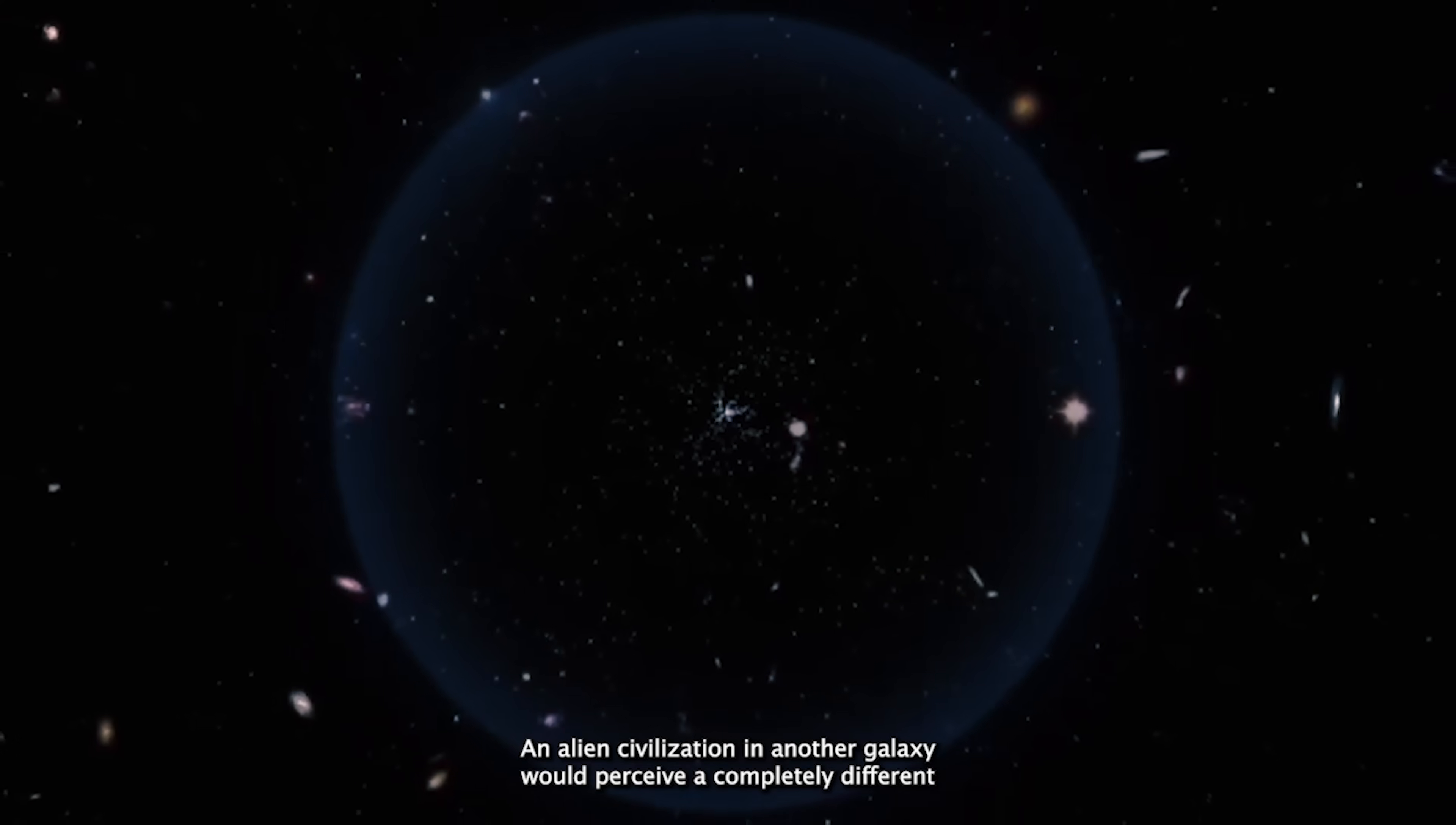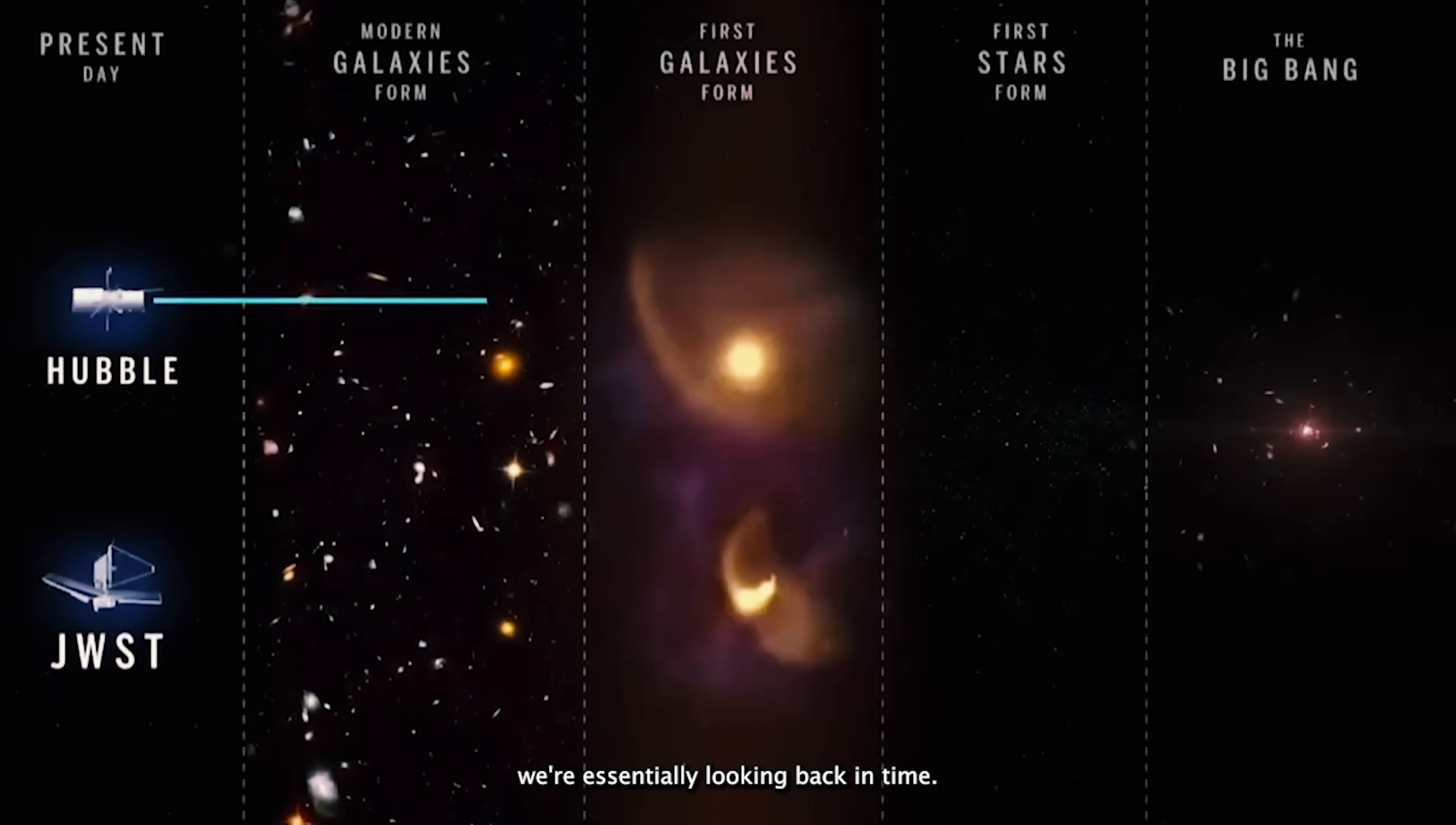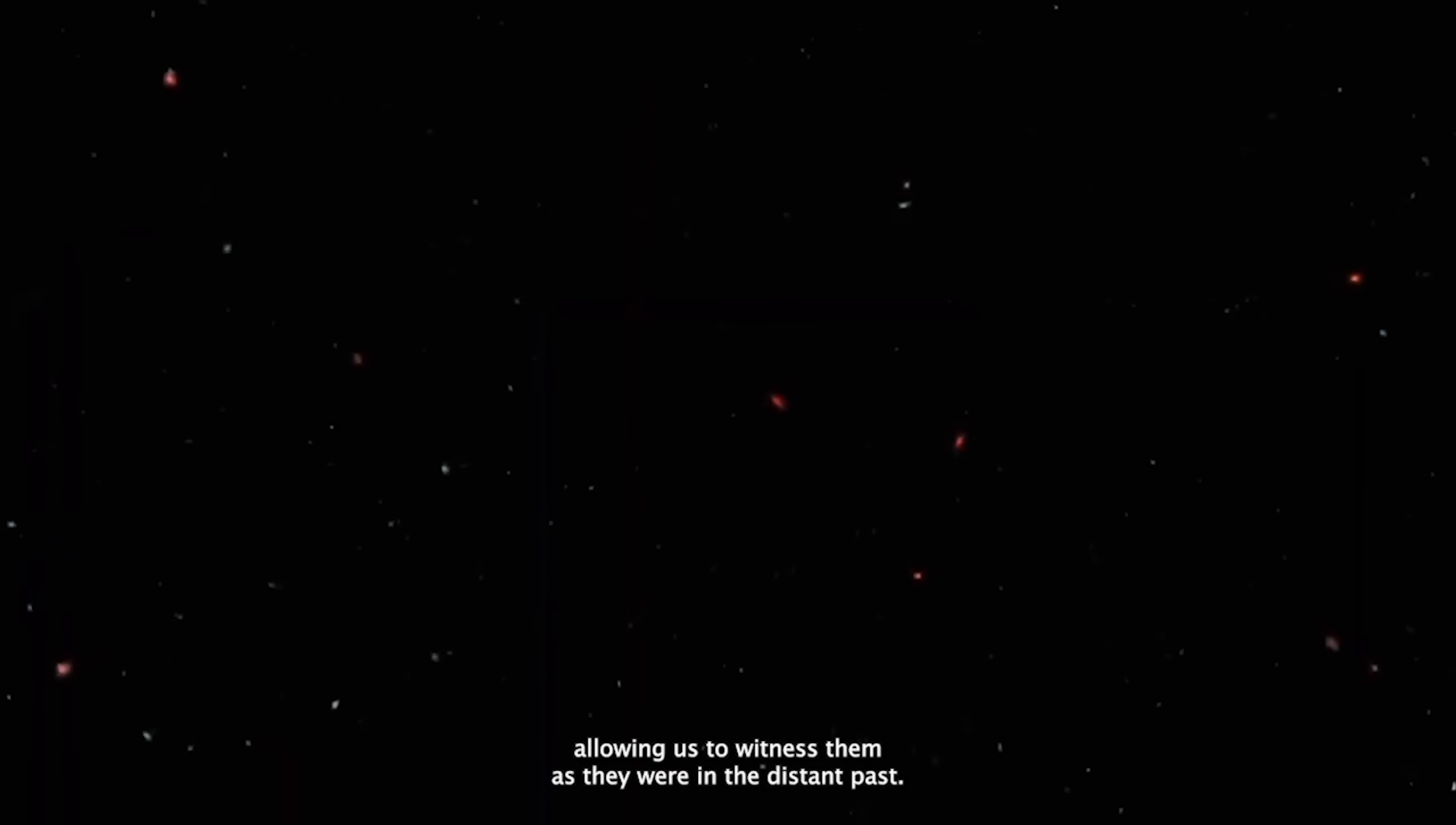An alien civilization in another galaxy would perceive a completely different version of the observable universe due to their unique position in space. Interestingly, when we observe distant regions of the universe, we are essentially looking back in time. This is because the light from faraway stars and galaxies takes billions of years to reach us, allowing us to witness them as they were in the distant past.